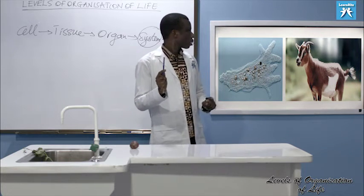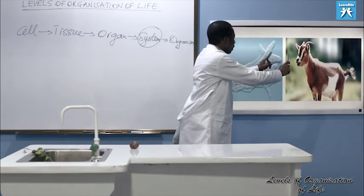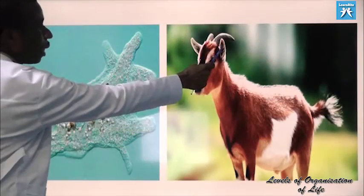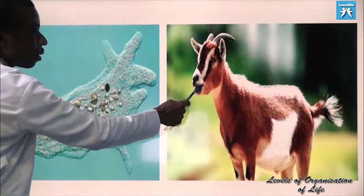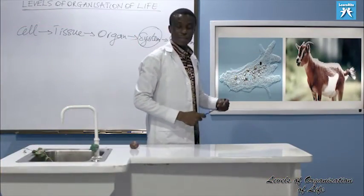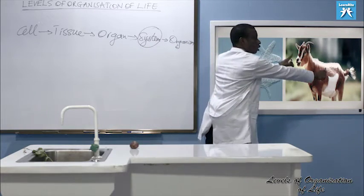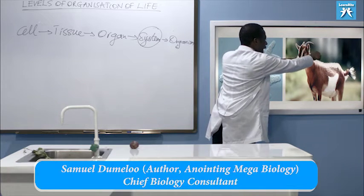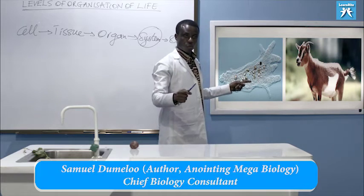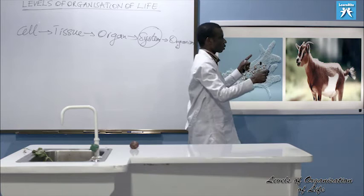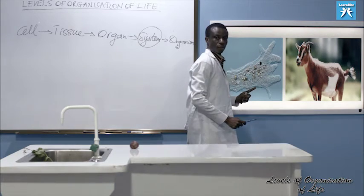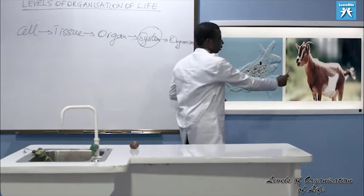However, a multicellular organism is more complex than a unicellular organism. The goat is more complex than amoeba — you can see horns, ears, eyes, nose, mouth, teeth, tongue, legs — we cannot finish mentioning them. So the goat itself is a complex structure because of the various structures on it, and because of specialization in the cells too. This one is simple — it's only one cell. The multicellular organism is more complex.